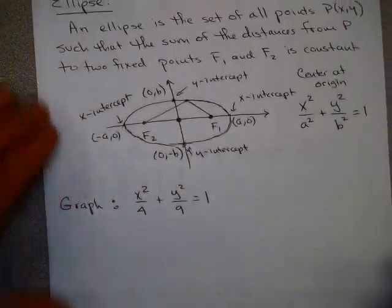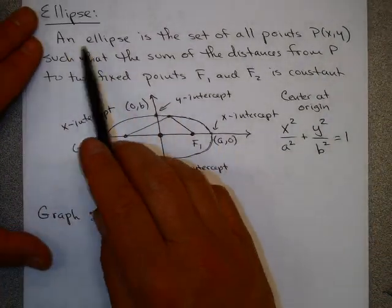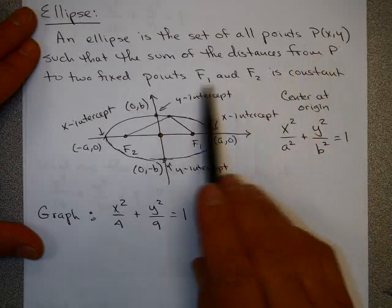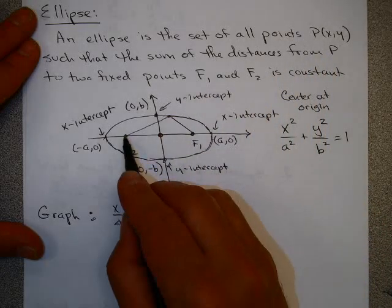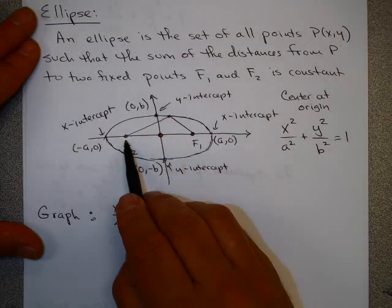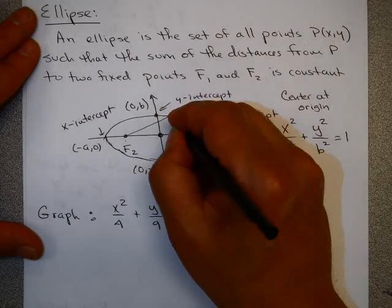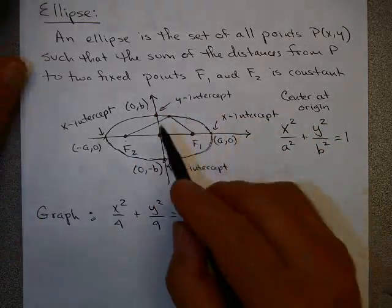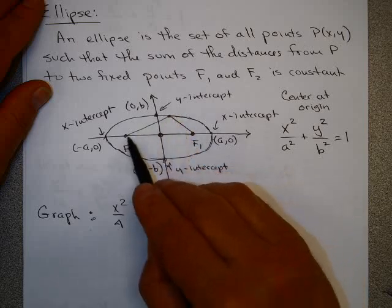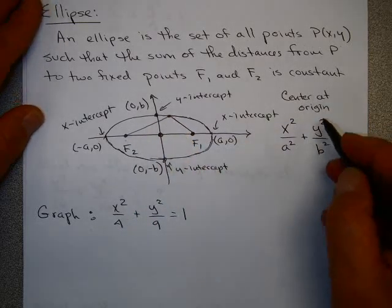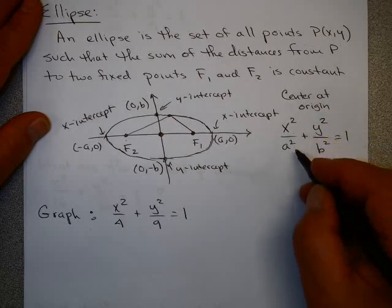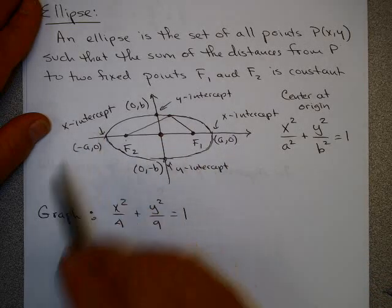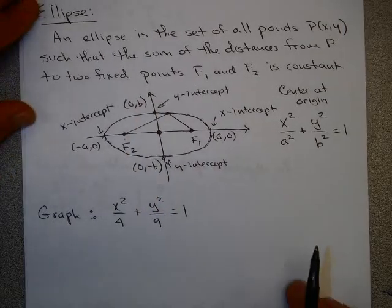Let's move on to more complicated ones — the idea of an ellipse. An ellipse is the set of all points P(x, y) such that the sum of the distances from P to two fixed points is constant. Imagine putting a nail at F1 and F2, taking a piece of string, putting your pencil on the end, and tracing the whole thing — you'd get something that looks like an oval. The equation for an ellipse centered at the origin is x squared over a squared plus y squared over b squared equals 1, where a and minus a are the x-intercepts, and b and minus b are the y-intercepts.